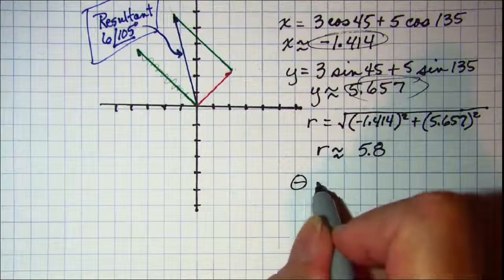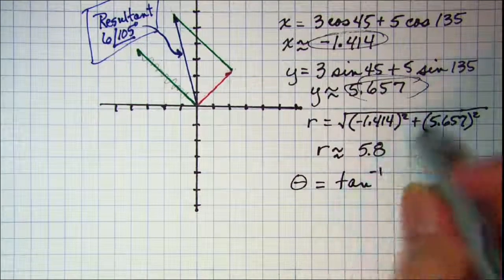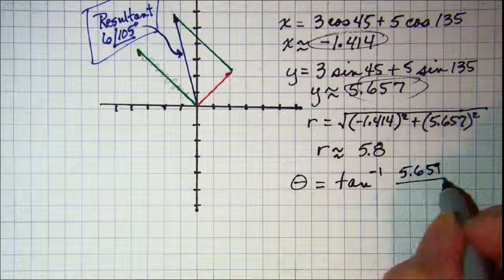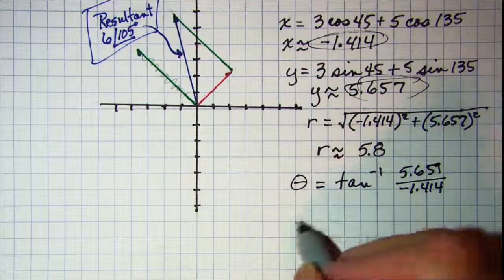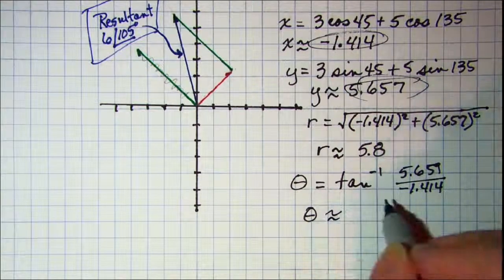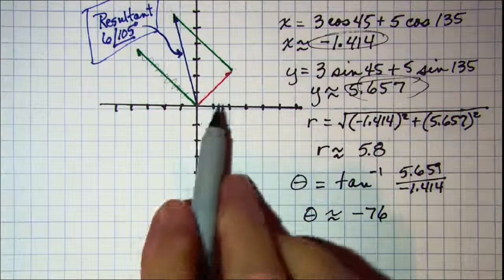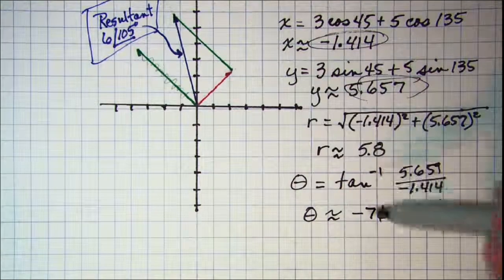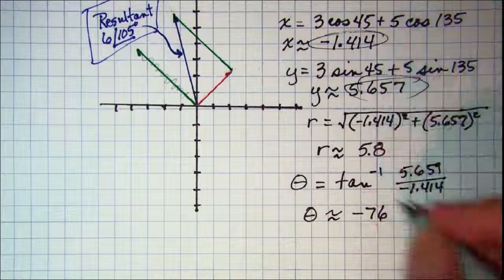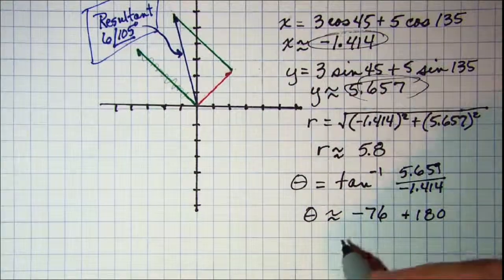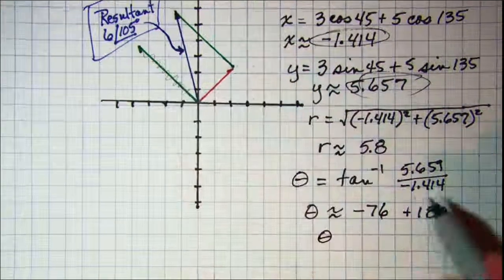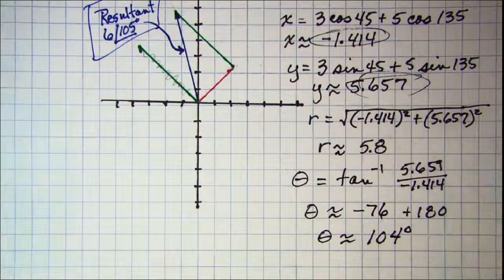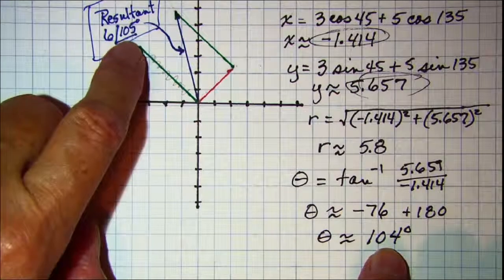And then my theta will be arctan of y over x, so 5.657 divided by negative 1.414. So my theta is about negative 76. Now remember that tangent won't show up on the calculator if your vector is in quadrant 2. So I need to—this angle is down here in quadrant 4, so I need to add 180 to that to get my theta for the resultant and that will be about 104 degrees, which again that's very close to the one that I got with the head to tail method.